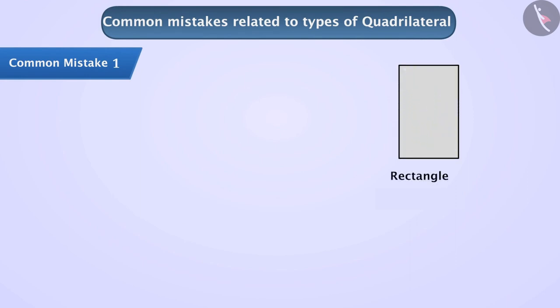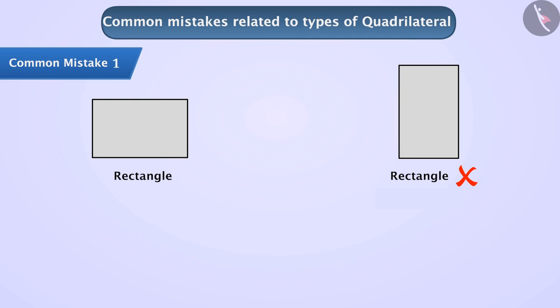Students often understand that this is not a rectangle. The reason is that a rectangle is usually represented in a standard way. Repeatedly looking at that figure, they conceptualize that if a quadrilateral looks like that, then it is a rectangle, otherwise it is not. Since this figure does not match the rectangle in their mind, they assume it is not a rectangle.